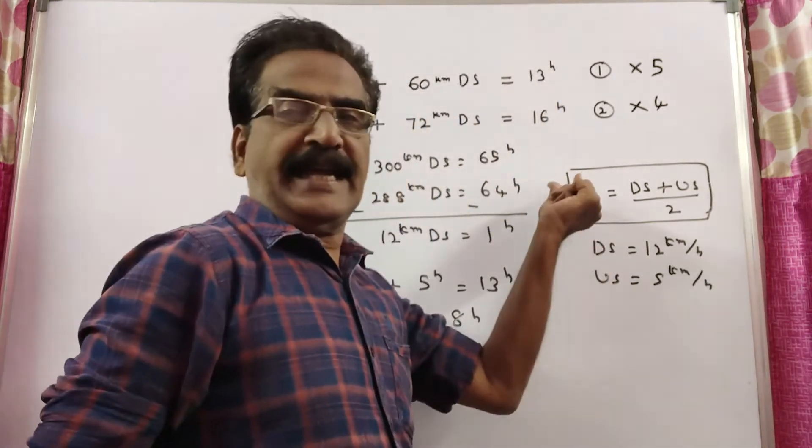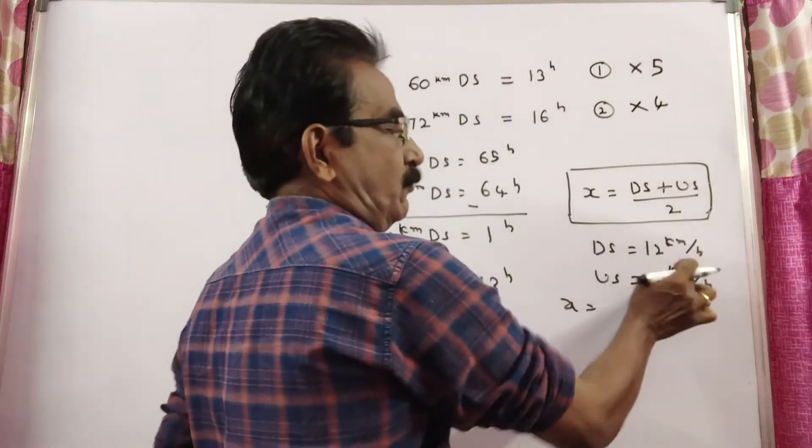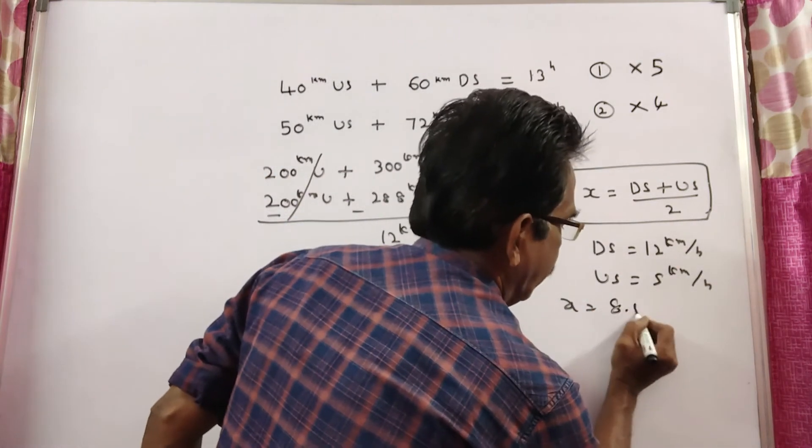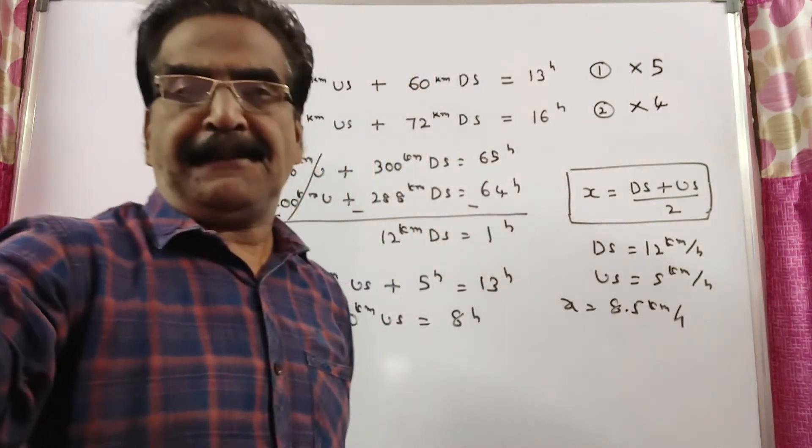Now, we want x. x is equal to DS plus US by 2. 12 plus 5 is 17, 17 by 2. So, 8.5 kmph is your answer, friends. 8.5 kmph.